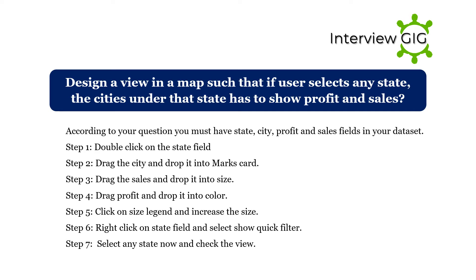Design a view in a map such that if a user selects any state, the cities under that state show profit and sales. You must have state, city, profit, and sales fields in your dataset. Step 1: Double-click on the state field. Step 2: Drag city and drop it into the marks card. Step 3: Drag sales and drop it into size. Step 4: Drag profit and drop it into color. Step 5: Click on size legend and increase the size. Step 6: Right-click on the state field and select 'Show Quick Filter.' Step 7: Select any state and check the view.